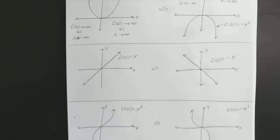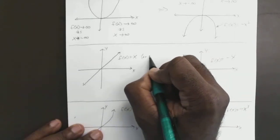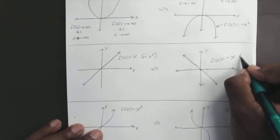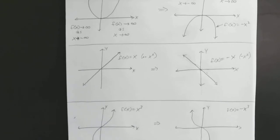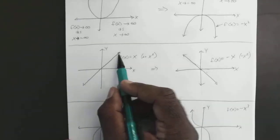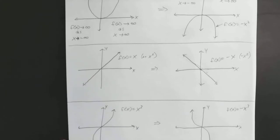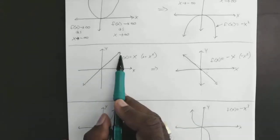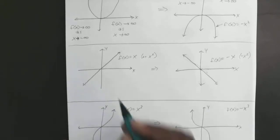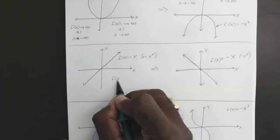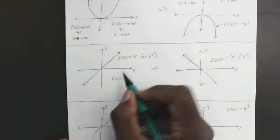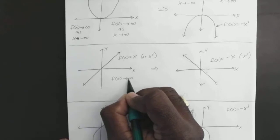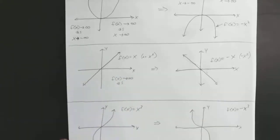Here, we can make that X to the first power because it makes a difference, and the explanation is coming up. As X keeps getting bigger and bigger, going further to the right, f(x) is going to get bigger and bigger. So f(x) approaches positive infinity as X gets bigger and bigger.